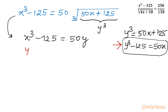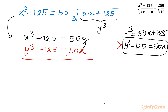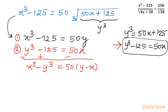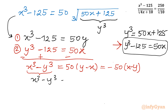Let me write both equations clearly: Equation 1 is x³ - 125 = 50y, and Equation 2 is y³ - 125 = 50x. Subtracting equation 2 from equation 1: x³ - y³ = 50y - 50x, or equivalently x³ - y³ = −50(x − y).